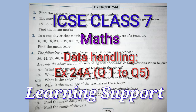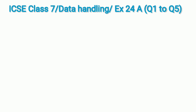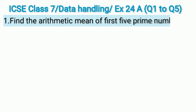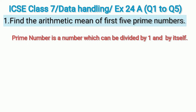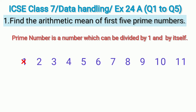The first question of Exercise 24A is: find the arithmetic mean of the first five prime numbers. For this we must know what prime numbers are. A prime number is a number which can be divided by one and by itself only — it cannot be divided by any other number. One is neither prime nor composite. Two and three are prime numbers.